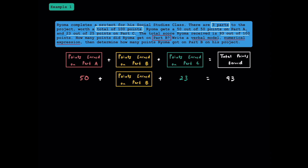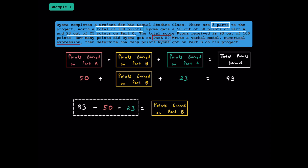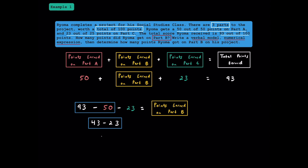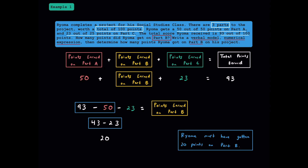Let's rearrange this a bit. If we write the total points he earned, which was 93, and take away the 50 points he earned in part A, and take away 23 points he earned in part C, this should equal the points he earned in part B. Going from left to right, 93 minus 50 is 43, so we have 43 minus 23, which is 20. We can conclude that Roma got 20 points on part B.